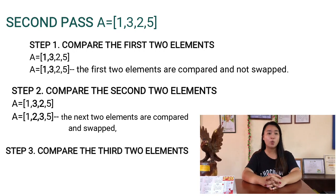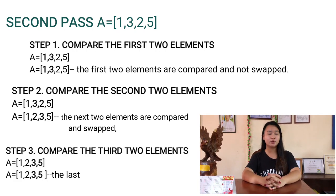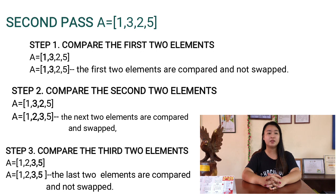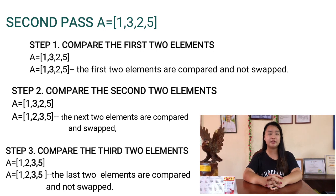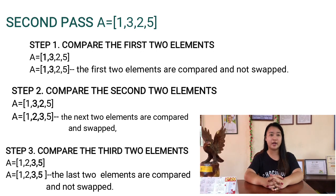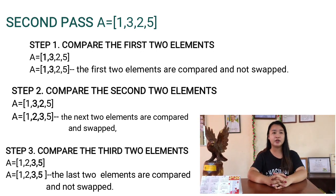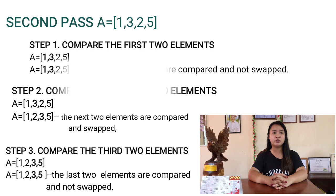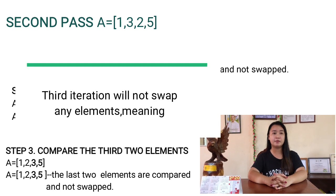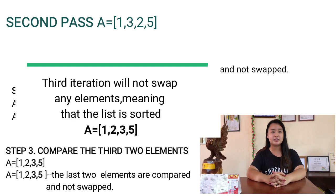Step 3: [1, 2, 3, 5]. The last two elements, 3 and 5, are compared and not swapped. The third iteration will not swap any elements, meaning that the list is sorted.